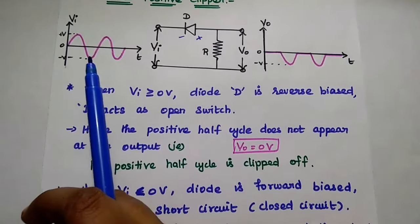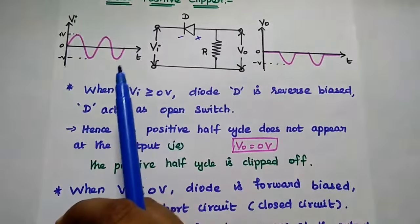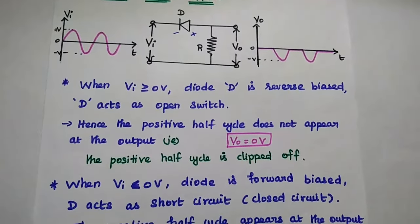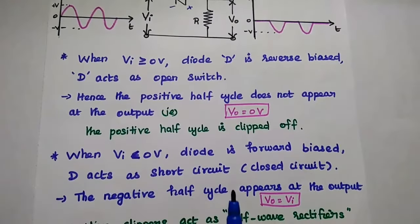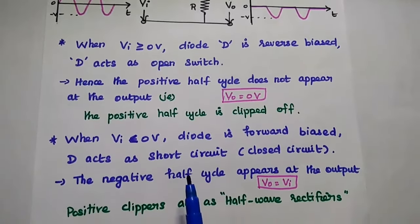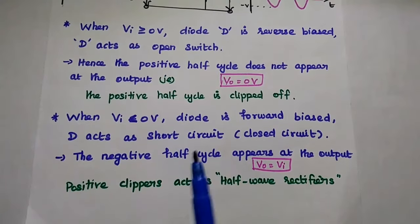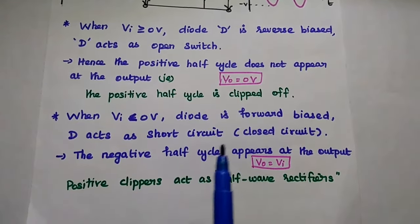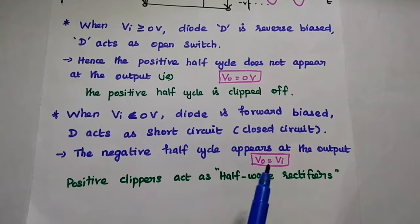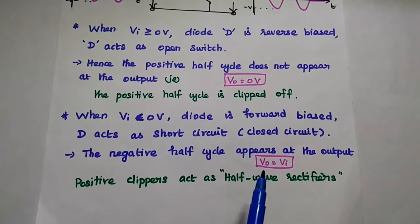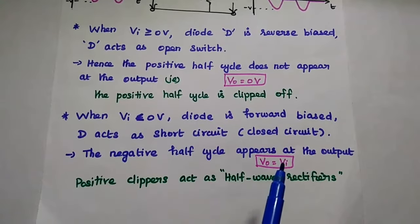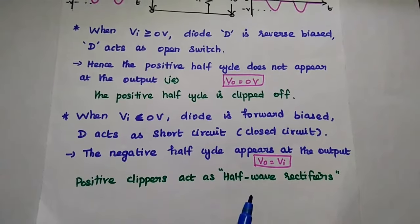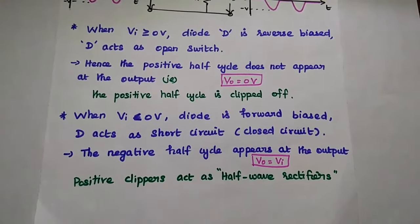During the negative half cycle, negative and negative are both connected, meaning the diode is forward biased. Whenever the diode is forward biased, it acts as a short circuit — that is, a closed switch — and the diode conducts the signal. So the negative half cycle appears at the output side. Finally, we get only the negative half cycles of the input as the output. It acts as a half wave rectifier.